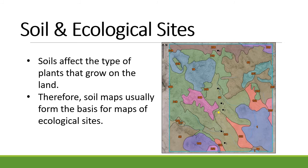Soil maps are important because soil affects the type of plants that grow on the land, and therefore soil maps are the source from which we make basic decisions. If an individual soil map unit has a specific type of plants that's important for management, we would call that group of plants an ecological site. The actual management we do on rangelands is usually on an ecological site basis.